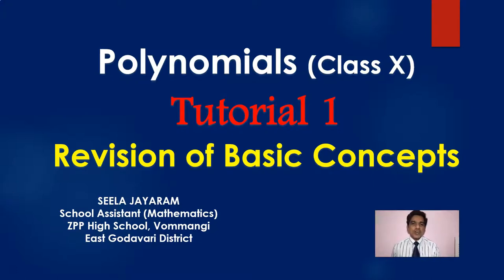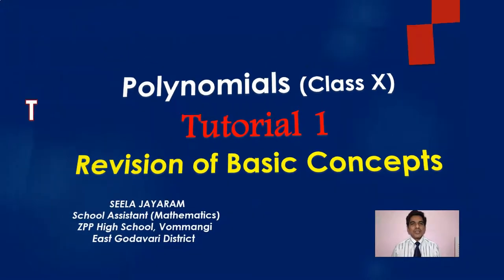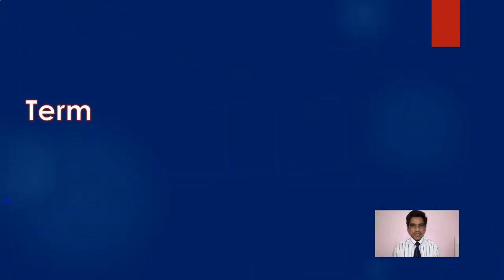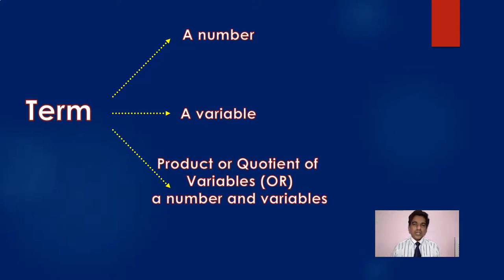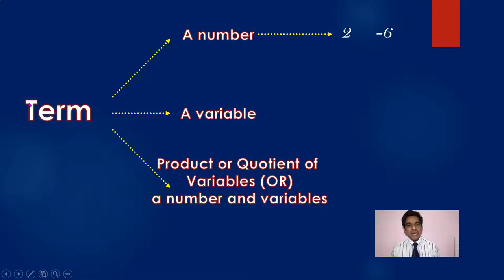We already know that the building block of polynomials is a term. There are three different ways in which you can define a term. A term is either a number, or a variable, or a product or quotient of variables, or a product or quotient of a number and variables. Numbers like 2, 3, 10, 1/2, 0.35, or square root of 3 — all these numbers can be considered as terms in algebra.